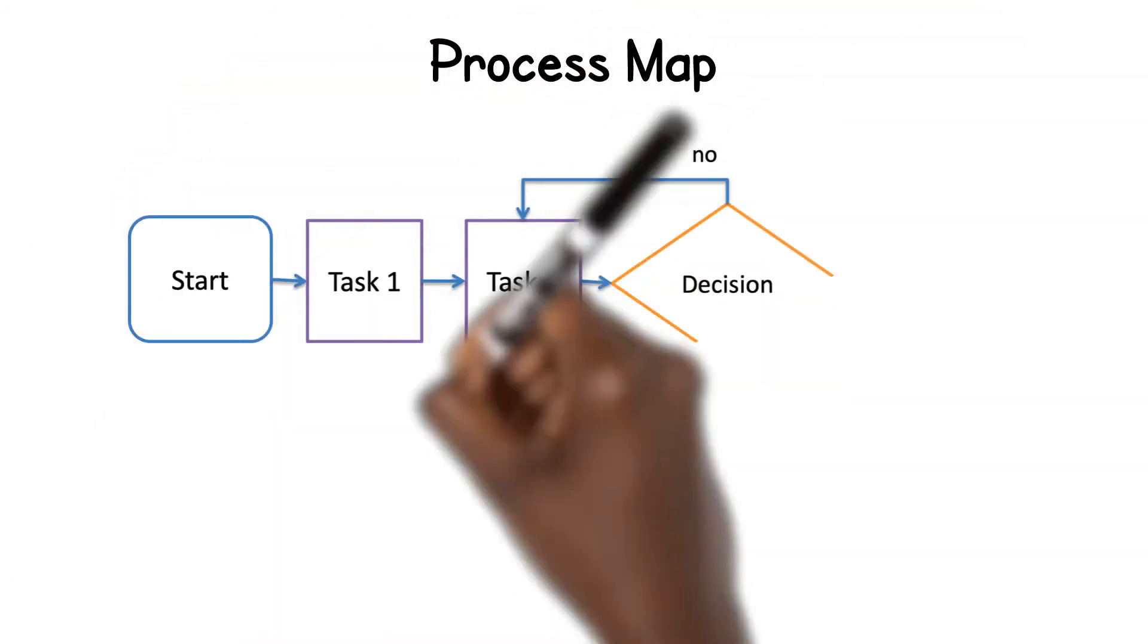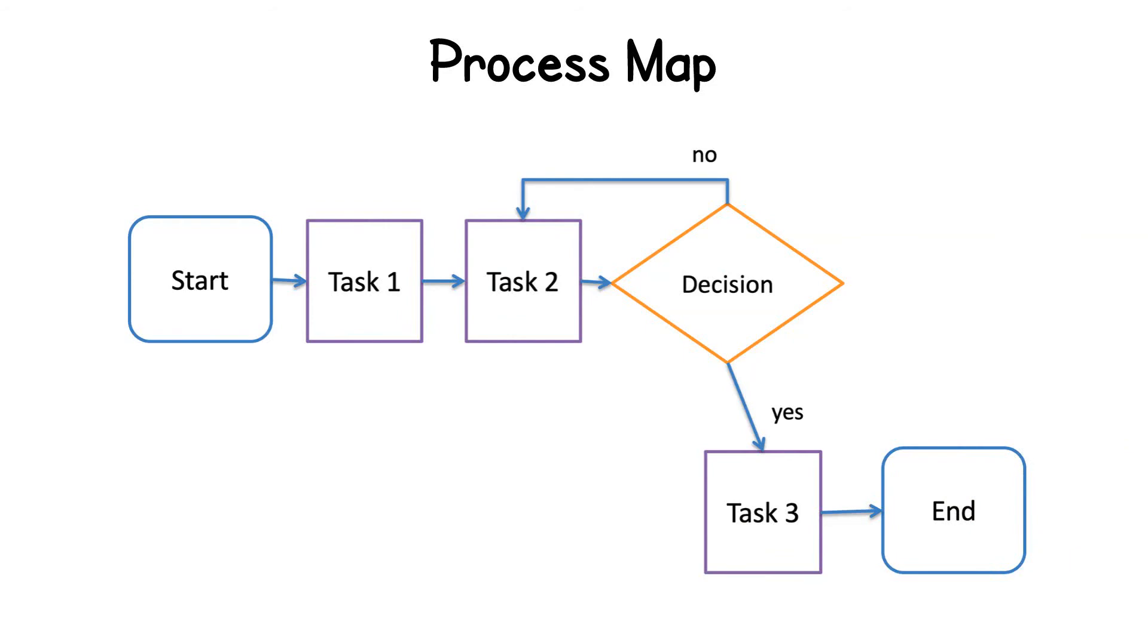Here is an example of what a simple process map would look like. There is a starting point, two tasks, and then a decision needs to be made. If the answer to the decision is yes, proceed to task three and complete the process. But if the answer is no, you go back to task two and repeat the decision process again until the answer to the decision is yes.